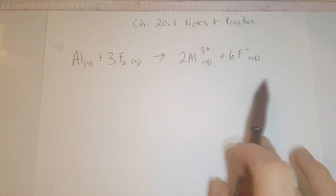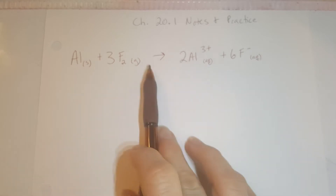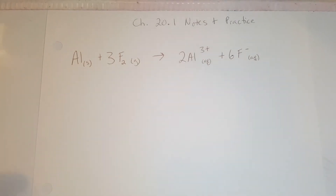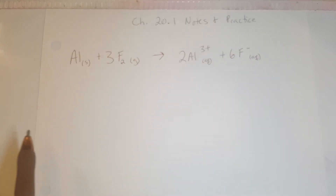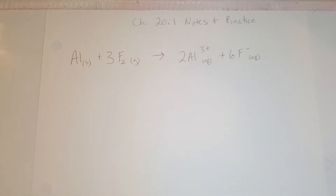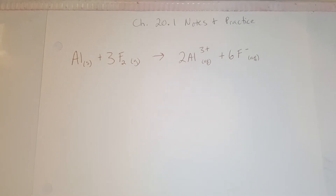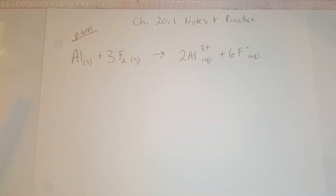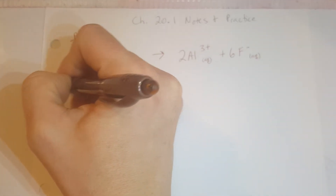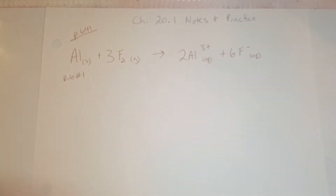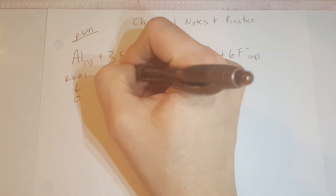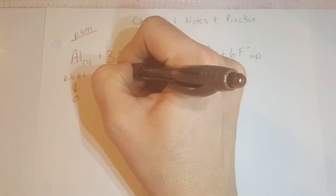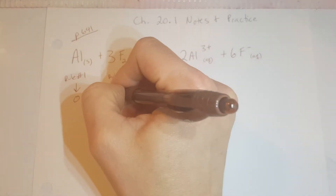So we have this chemical reaction: we have aluminum solid and fluorine gas, and it's going to yield our two ions. The question is which substance is undergoing oxidation and which is undergoing reduction. The first thing we have to do is refer to our rules on page 641. Because of rule number one, aluminum is just an element, so it has an oxidation number of zero. The fluorine gas, also because of rule number one, is a diatomic element and has an oxidation number of zero.